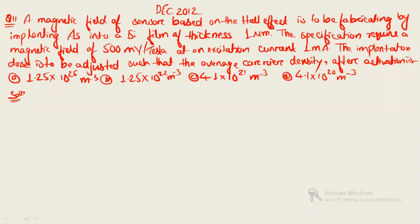Welcome back. In this video we will see the questions of December 2012. The first question: a magnetic field sensor based on the Hall effect is to be fabricated by implanting arsenic into a silicon thin film of thickness 1 micrometer. The specification requires a magnetic field sensitivity of 500 millivolt per Tesla at an excitation current of 1 milliampere. The implantation dose is to be adjusted such that the average carrier density after activation is what — so you are asked to calculate the average carrier density.